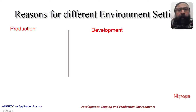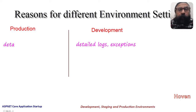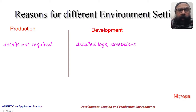Let us now understand why we need different environments in an ASP.NET Core application. One reason is that an application under development needs detailed logs and exception messages, but the case is just the opposite for the same app running under production, where logging and debugging messages are not required in great depth — they are required only in indicative forms.